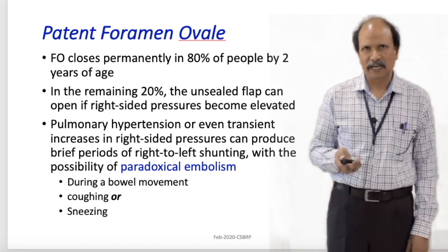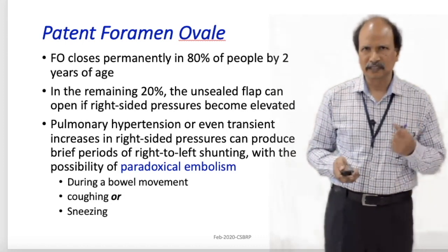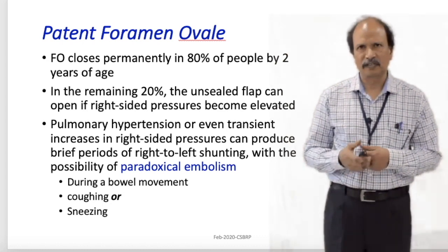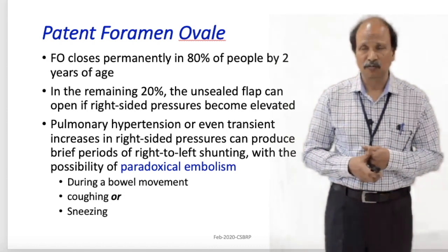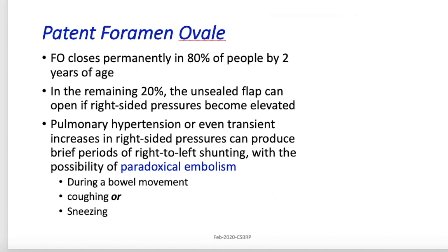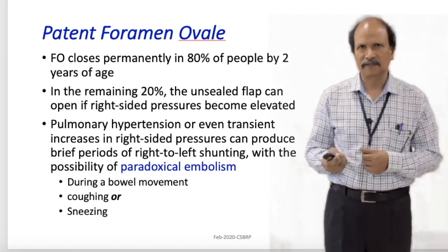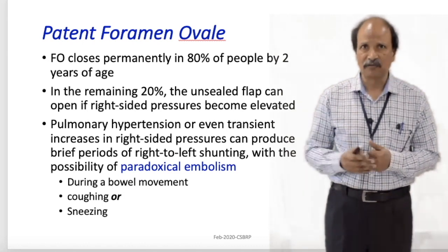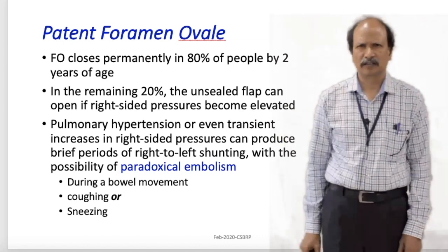Paradoxical embolism through a patent foramen ovale can occur during daily activities when the right side of the heart is pushed to higher pressure — during coughing, sneezing, or straining during bowel movements. A thrombus on the right side can cross to the left side as increased pressure opens up the foramen ovale, which is otherwise kept closed by the septum primum because of the higher tension on the left side.